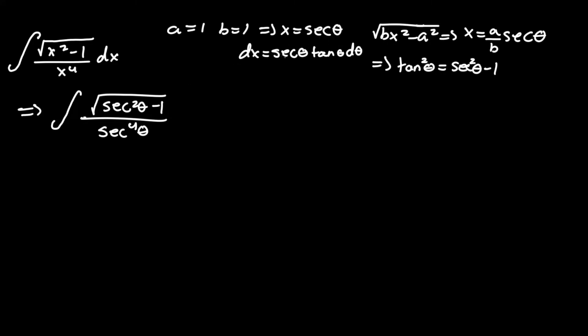And now we can isolate d theta. So dx equals secant theta tan theta d theta. Now we can do a little bit of simplification and substitution. Let's do that right now.